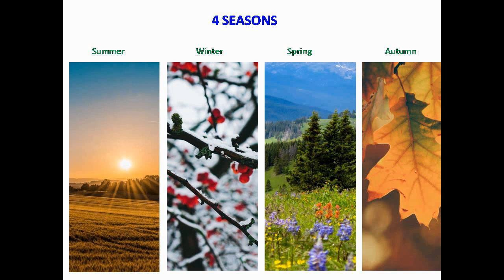Now let's see about Earth's seasons. The revolution of Earth around the Sun gives seasons, and it is an annual cycle. We have four seasons: summer, which is the hottest season of the year; winter, which often brings chillness and some areas may experience snowfall; spring, when flowers bloom, leaves start to develop, and plants replicate; and autumn, which is harvest time and often leaves fall from trees.